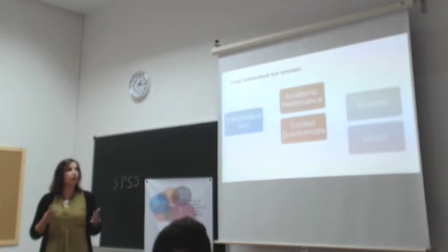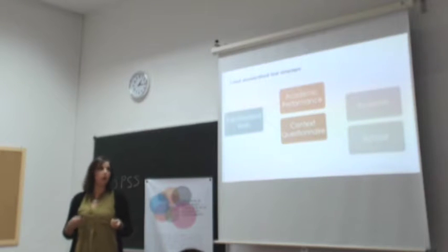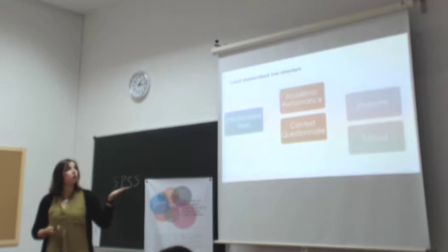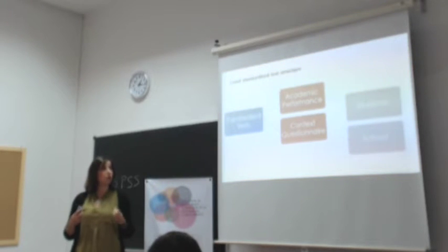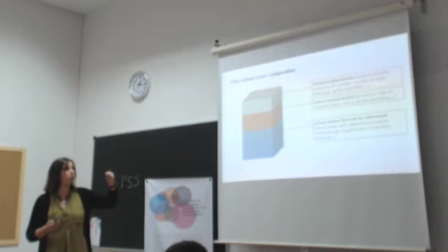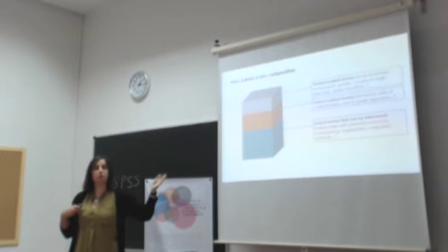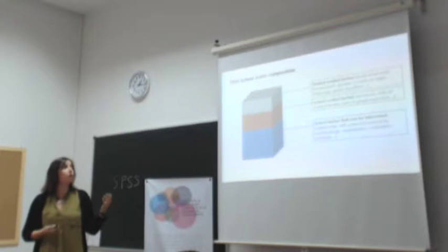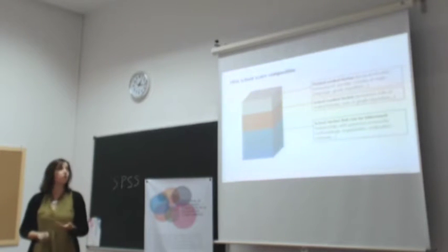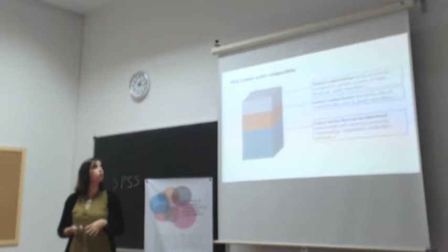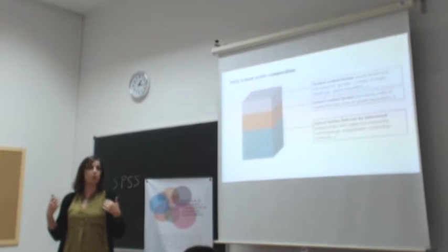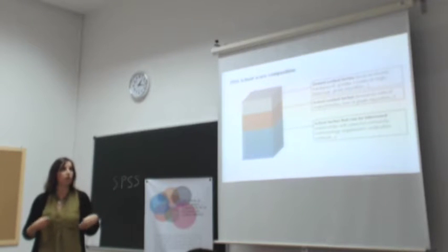These standardized tests usually have this structure. We have academic performance tests, which measure the competence level of students in areas such as mathematics and reading. We also have context questionnaires providing information on student and school context. This context information has three main components: student context factors such as gender, immigration origin, and socio-economic background; school context factors such as school resources, gender ratio, and student repetition rate; and intervening factors such as relationships with the community, methodology, and organizational practices.